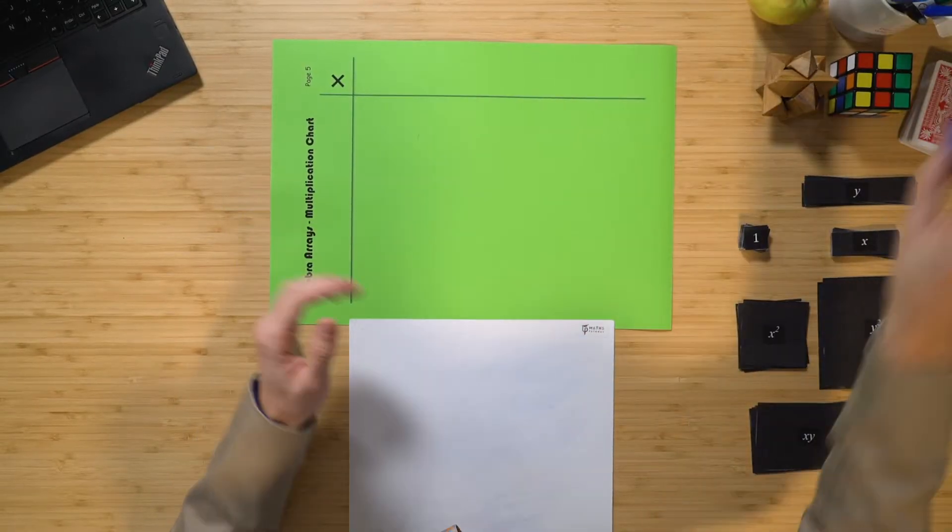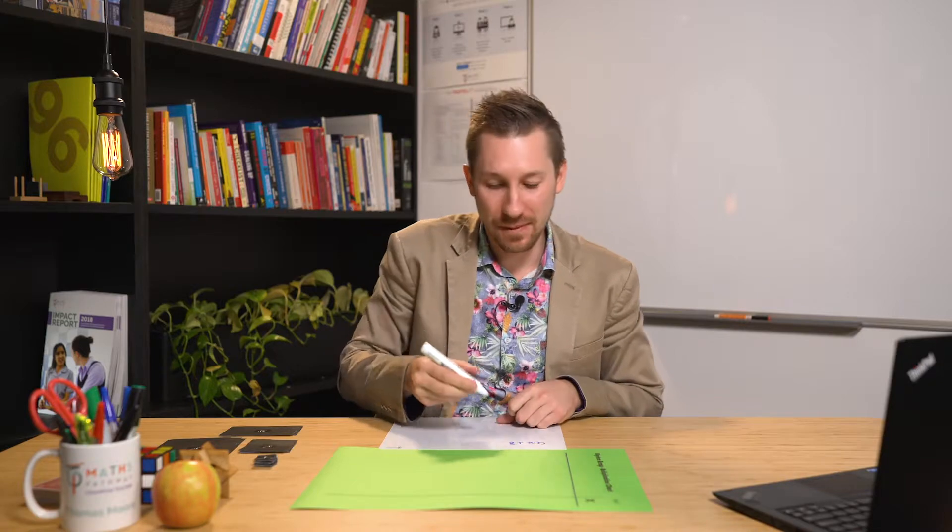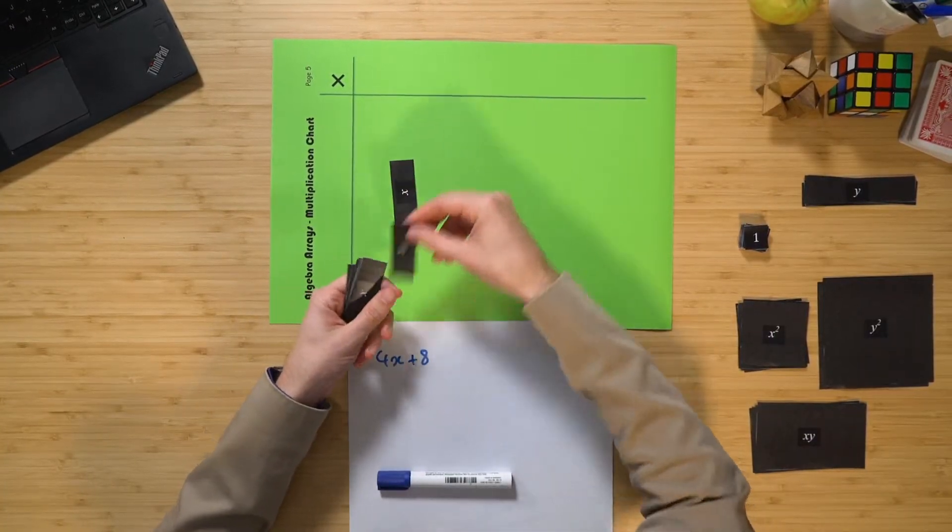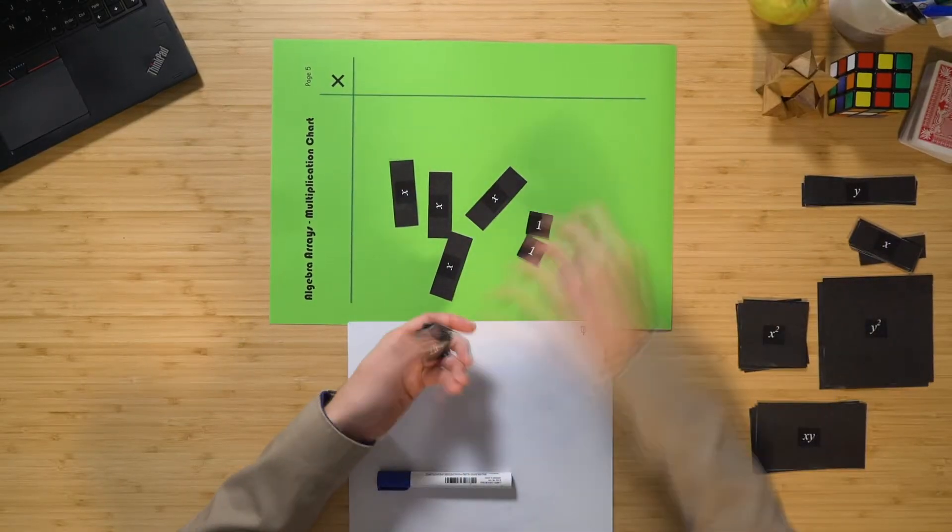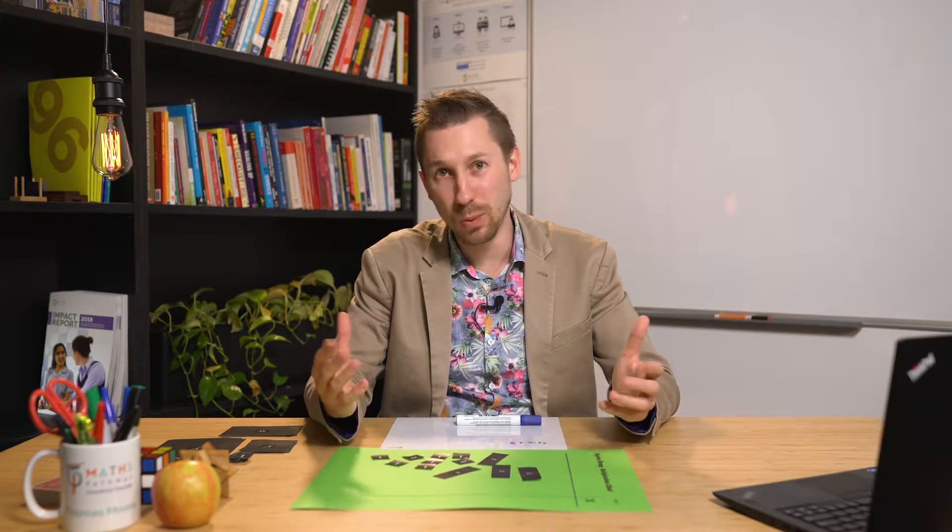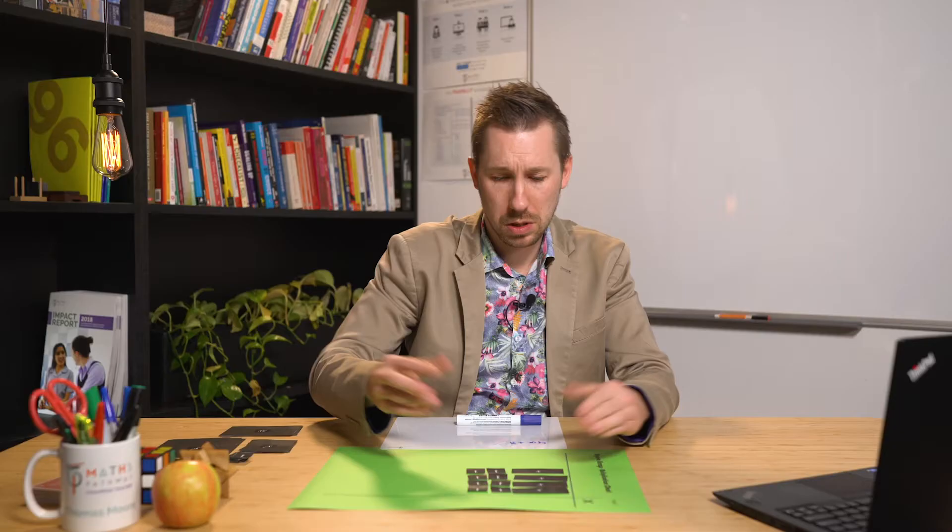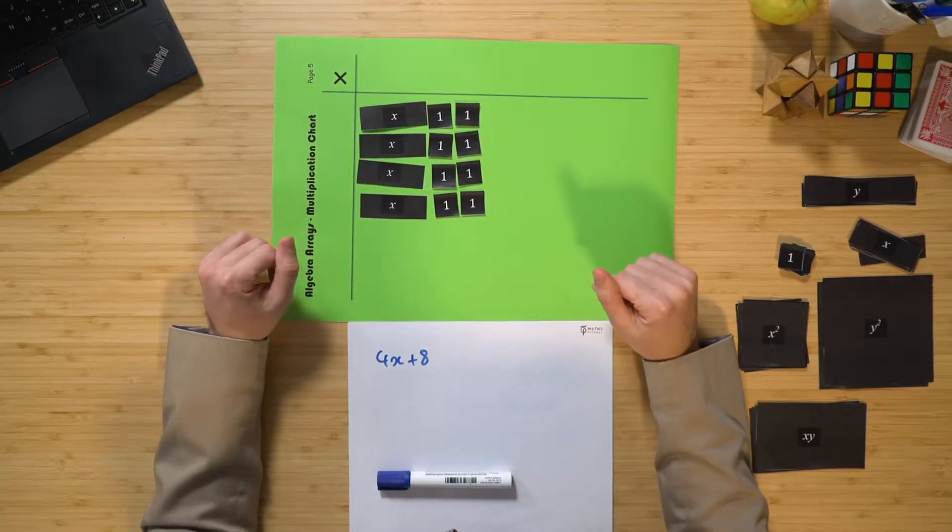Let's start out with, say, the question 4x plus 8. And we need to make a rectangle out of this in order to be able to factorise it. Well, first of all I need to get 4 x's. And then I need to get 8. Now, in order to factorise it, I just simply need to rearrange these to make a rectangle. I'll show you what I mean. There we go. I've rearranged 4x plus 8 to make a rectangle.